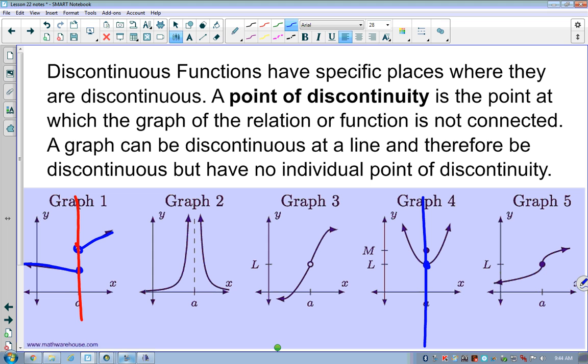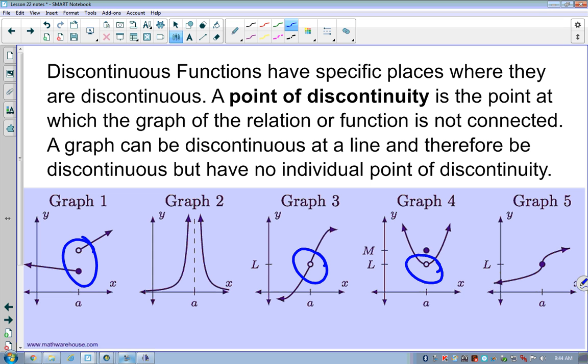So the point where it breaks is called our point of discontinuity. Our best pictures are here. There's a good point of discontinuity. A point of discontinuity is the point at which the graph of the relation or function is not connected. A graph can be discontinuous at a line and therefore be discontinuous but have no individual point of discontinuity. That is what we see here with graph number two.